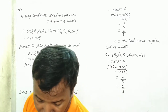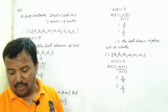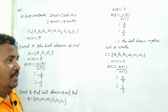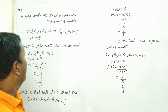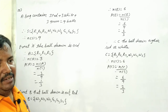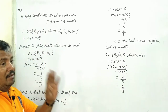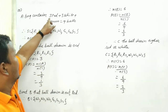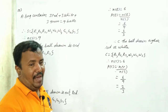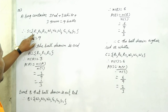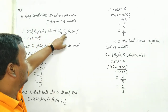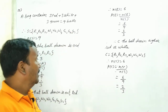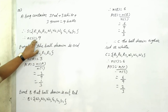Question number 12: A bag contains 3 red, 3 white, and 3 green balls. One ball is taken out of the bag at random. Total balls in the bag are 9. So S is equal to {R1, R2, R3, W1, W2, W3, G1, G2, G3}. Number of S is equal to 9.